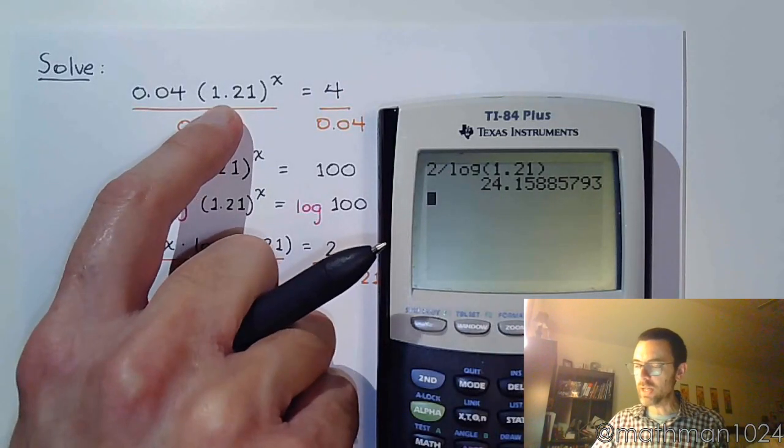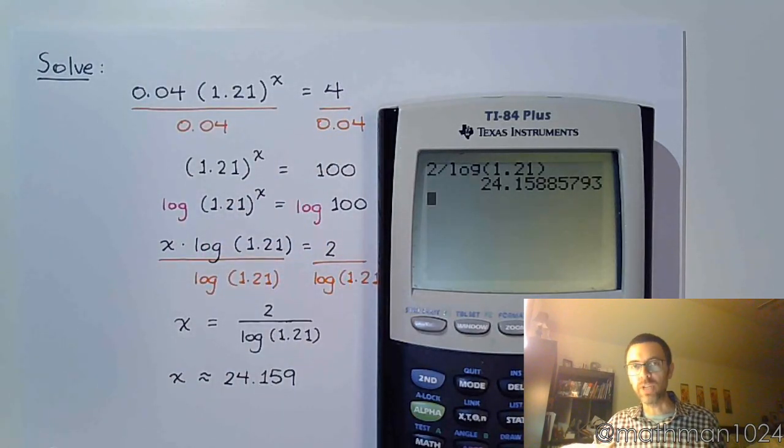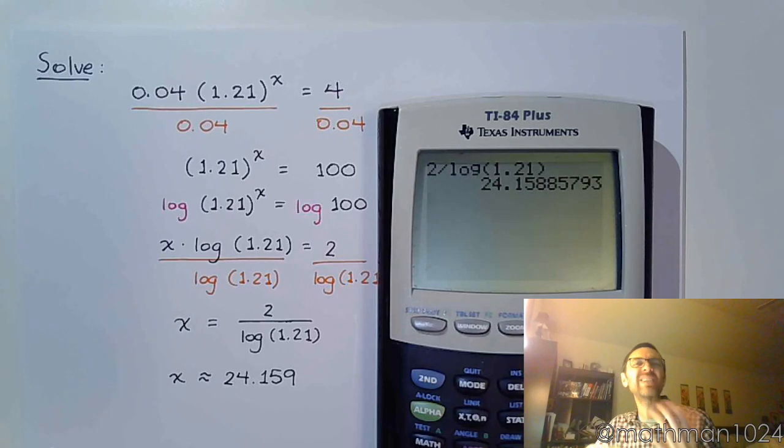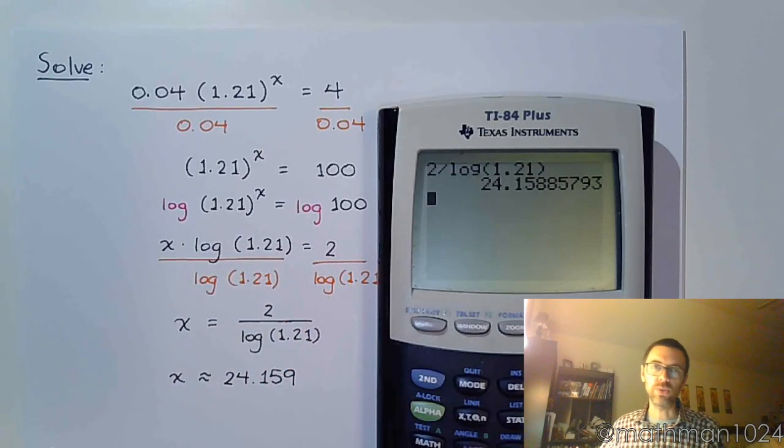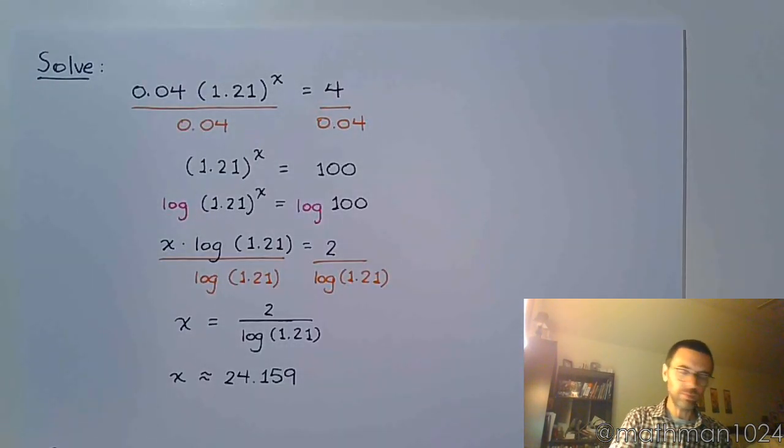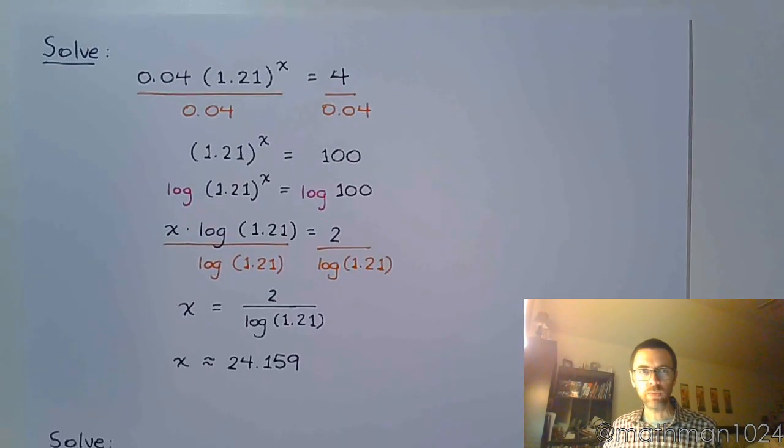If this had been, if one of these guys had been an e, for example, I definitely would have used a natural log because a natural log can just very nicely cancel and reduce with e. This was a power of 10, which is why I used common log. All right, we've got one more here.